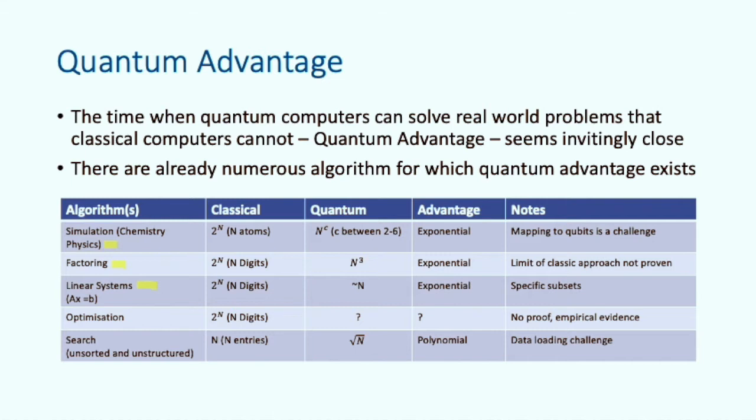Optimization is an interesting case. It is hard to prove that the quantum solution has exponential advantage, but there is good empirical evidence to suggest that the quantum solutions do indeed show exponential advantage. Search only has a polynomial advantage over the classical solution, but even that is very significant for large problem sizes.